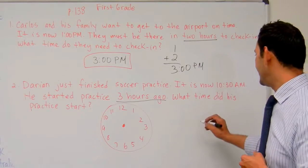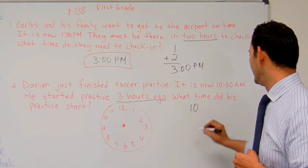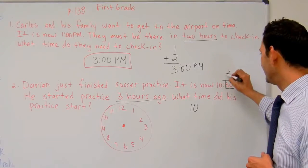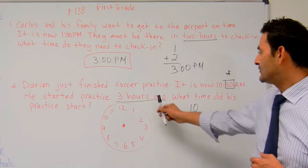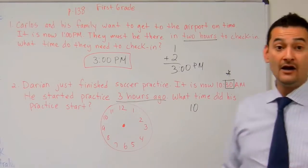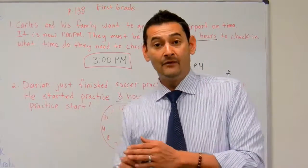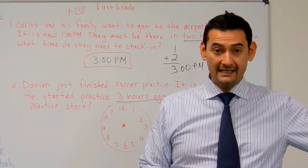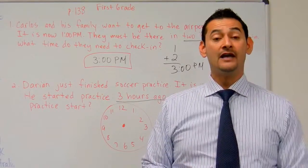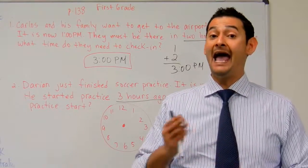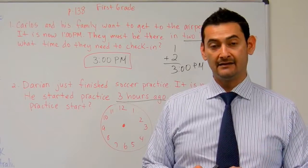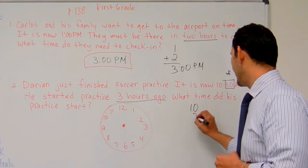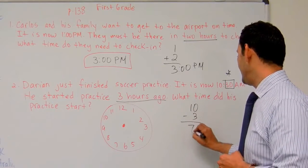So here we have 10:30 a.m. I'm just going to ignore the 30 part for a second, but I'm going to remember that. He started practice three hours ago. Are we going ahead in time or are we going back in time? We're going back in time, so we're going to subtract. So 10 minus three — that's going to be seven.